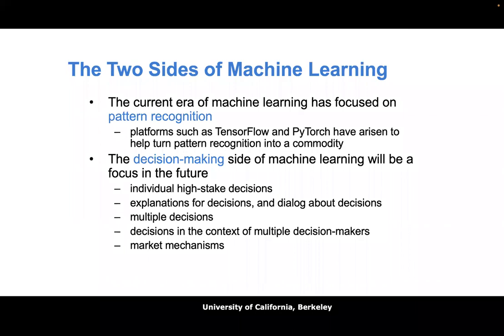The latest round of this is ChatGPT, which you've probably heard about. It is really limited in the sense that it's a pattern recognition system — it takes massive amounts of data and finds patterns. Whether those patterns are useful or good depends on the data. What's missing, even if the data is good, is a focus on decision-making.